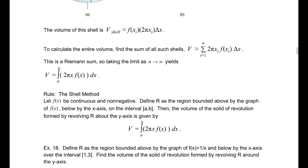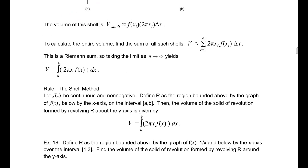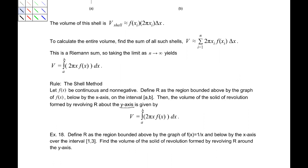Let f of x be continuous and non-negative. Define R as the region bounded above by the graph of f of x, below by the x-axis on the interval a to b. Then the volume of the solid of revolution formed by revolving R about the y-axis — big emphasis on the y-axis here — is given by the integral from a to b of 2 pi x f of x dx.